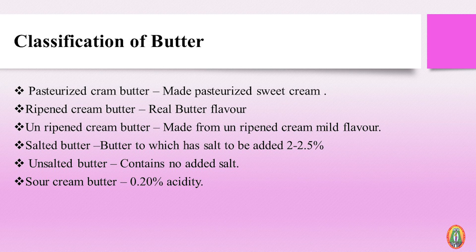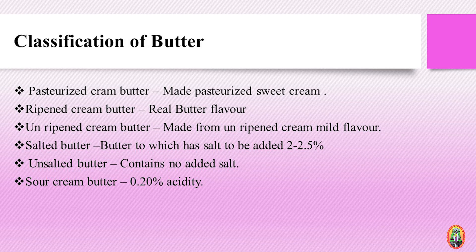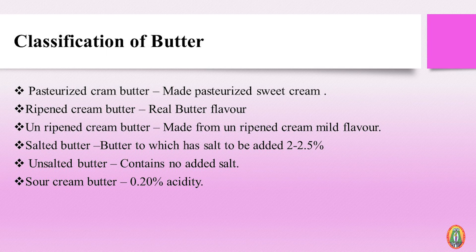Now we will see the classification of butter. Butter can be classified into many categories based on the production method: pasteurized cream butter and unpasteurized cream butter. Based on the ripening method: ripened cream butter and unripened cream butter. This ripening is nothing but a process of fermentation.